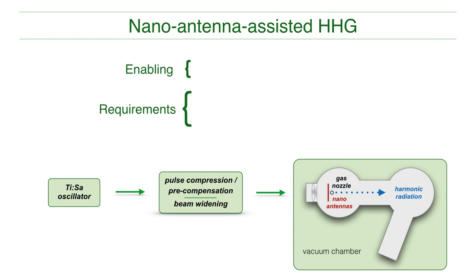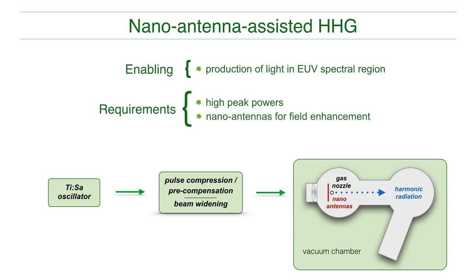Nano-antenna-assisted high harmonic generation directly from a laser oscillator enables spectroscopic applications in the extreme ultraviolet spectral region. To succeed, high peak intensities of at least 10^13 watts per square centimeter are necessary. Resonant nano antennas typically exhibit an intensity enhancement of more than two orders of magnitude and are therefore a possible scheme to reach the required peak intensities.